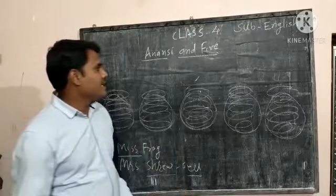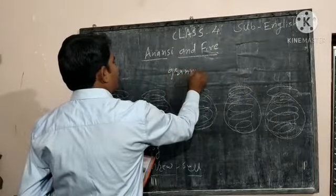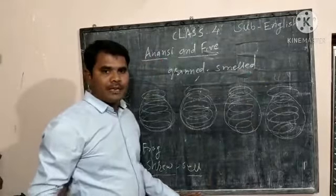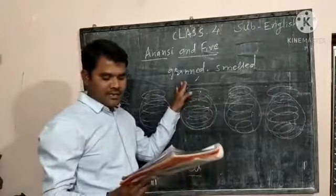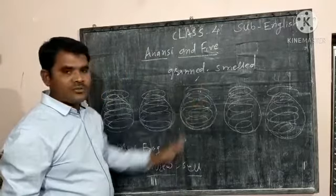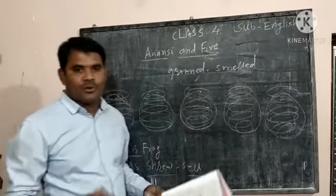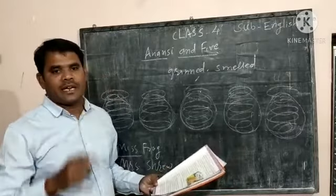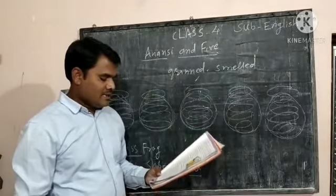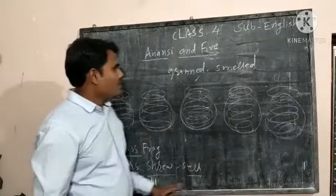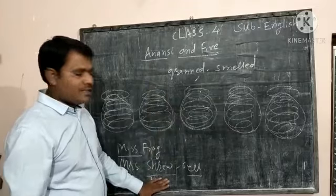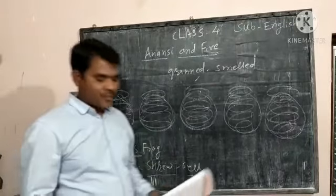Now Anansi grinned and showed all his sharp teeth. Anansi grinned, grin means smile. He was trying hard to be charming and attractive because he really wanted to eat all the peas. He was looking charming because she has peas and Anansi wants to eat all the pees. He was going to eat all the peas.